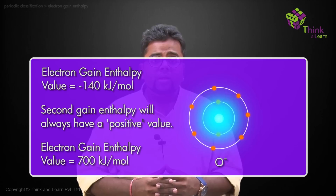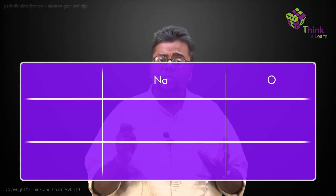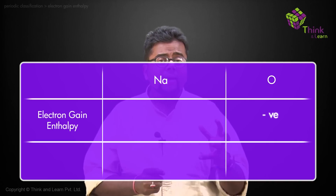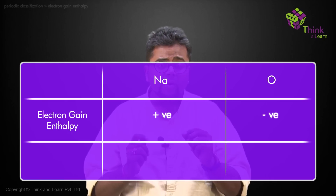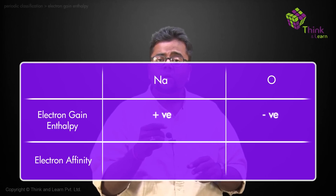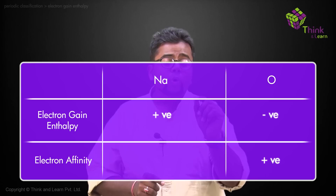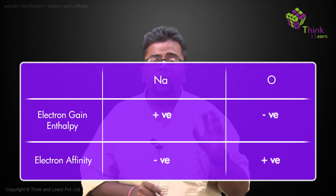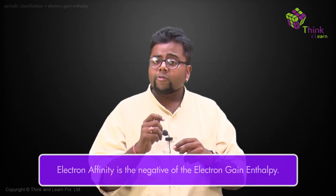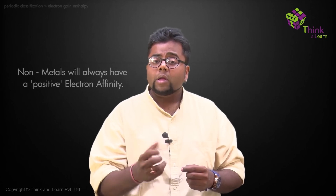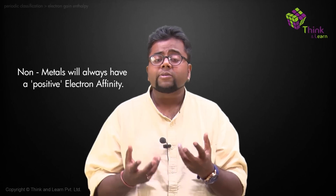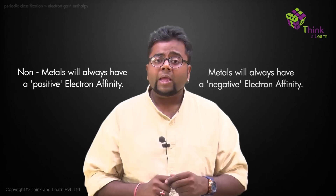Correlating electron gain enthalpy with electron affinity: for oxygen, the electron gain enthalpy is negative, and for sodium it is positive. In terms of electron affinity, oxygen has more electron affinity — so oxygen has a positive electron affinity. Sodium does not love electrons, so it has a negative electron affinity. Non-metals always have a higher, positive electron affinity, while metals always have a negative electron affinity. Don't confuse electron gain enthalpy and electron affinity — electron affinity is simply the negative of electron gain enthalpy.